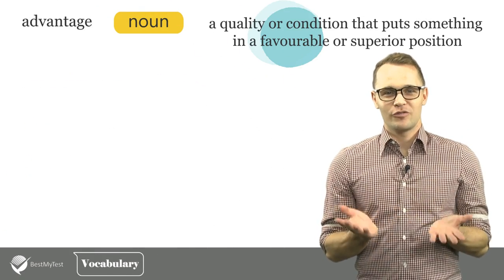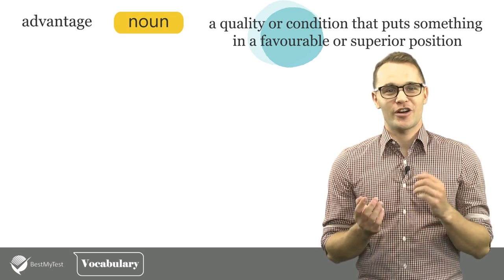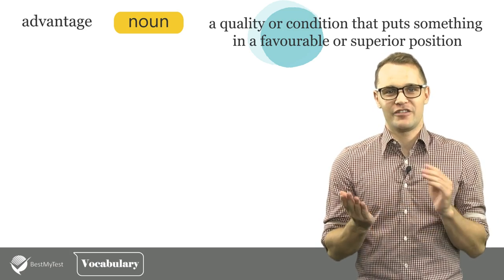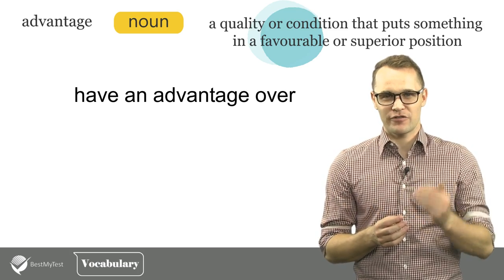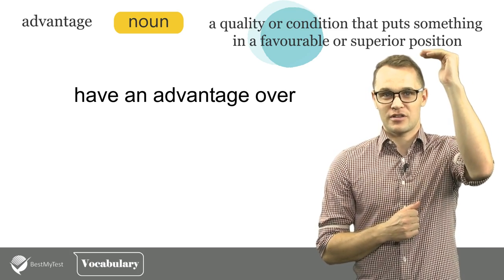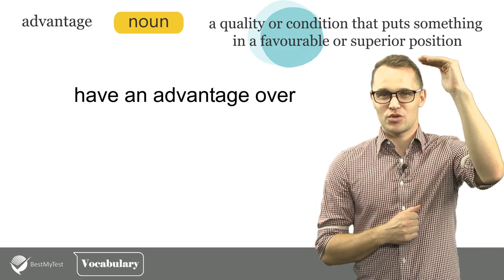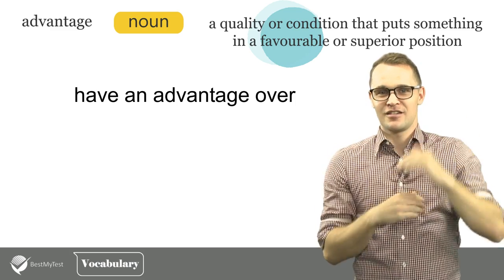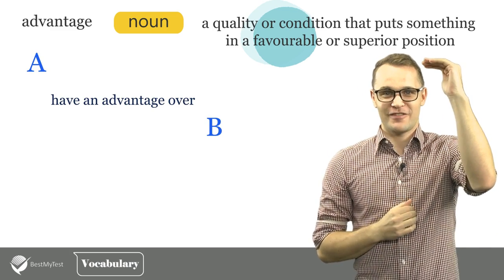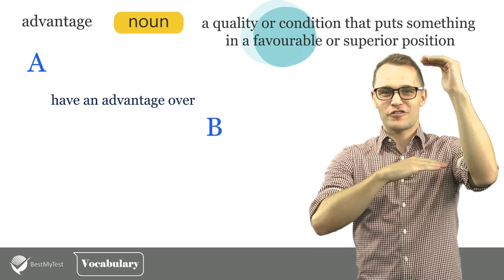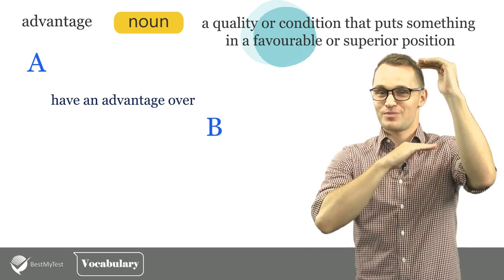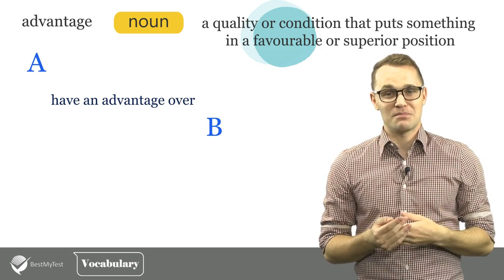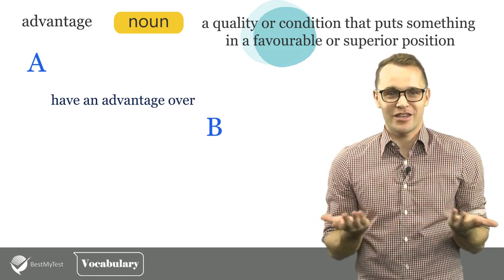If we want to specify the alternatives we are comparing to, we normally use the preposition 'over,' as in 'have an advantage over something.' Since Advantage refers to a position superior to another thing, it's natural to use 'over' here, to say that something is higher than another thing. So, 'A has an advantage over B' means that A is in a favorable or superior position compared to B. This phrase is commonly used when talking about competition in business, sports or even evolution.